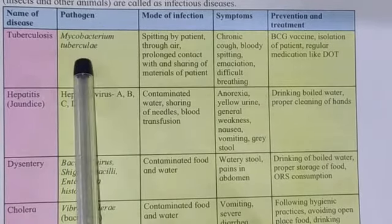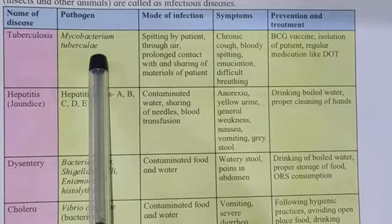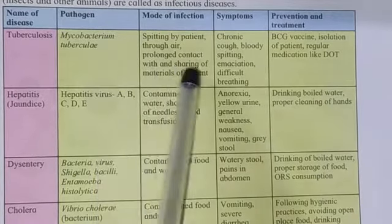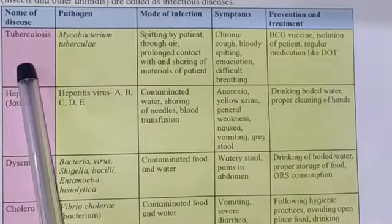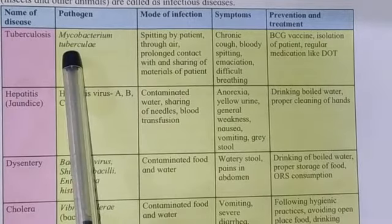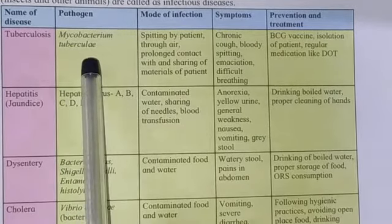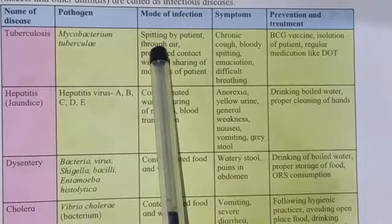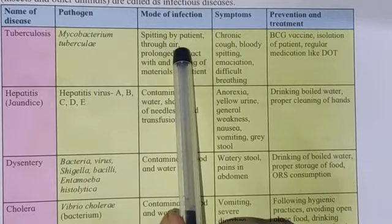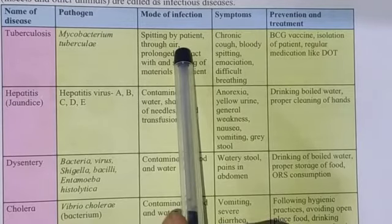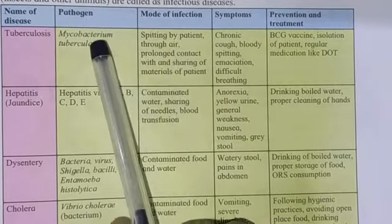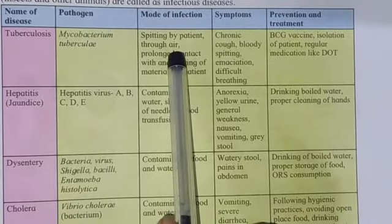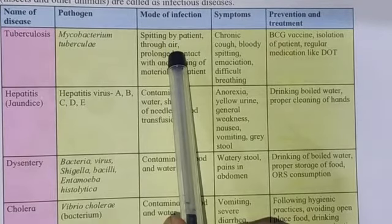Now this Mycobacterium tuberculi — you can see it is written in italic. It is the rule that scientific names must be written in italic, either bold or underlined. TB spreads with the help of the pathogen Mycobacterium tuberculi. How does it enter our body? That is called the mode of infection. First: spitting by the patient through air. When a patient suffering from TB spits in the air, the Mycobacterium tuberculi — the microorganisms present in his body — enter the air and can enter our body if we breathe in that air.